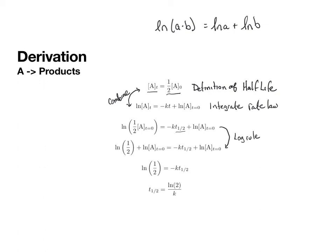Then I simplify, and I do that because I have a natural log of the initial concentration on both sides, so these cancel out.